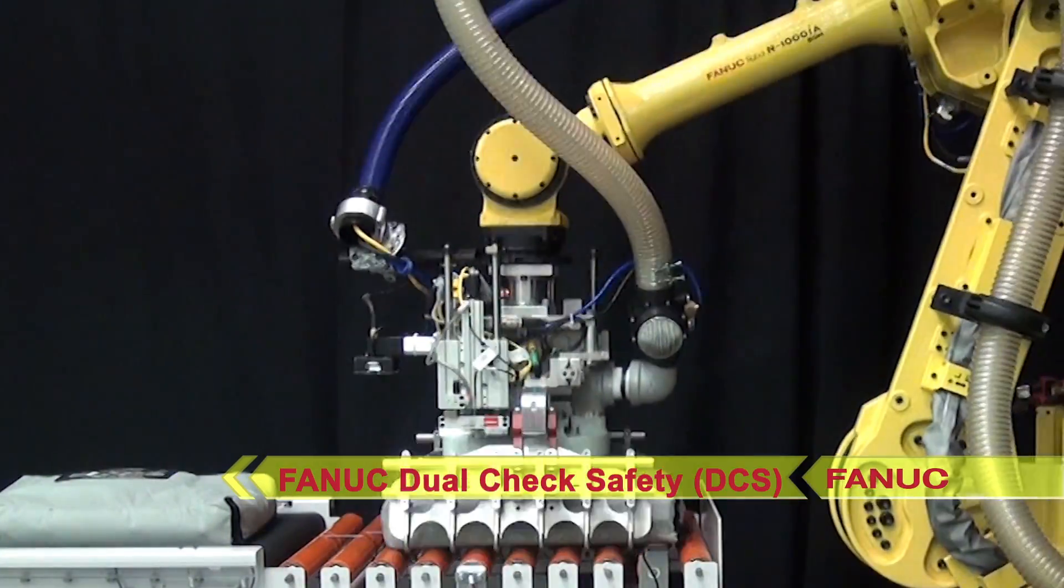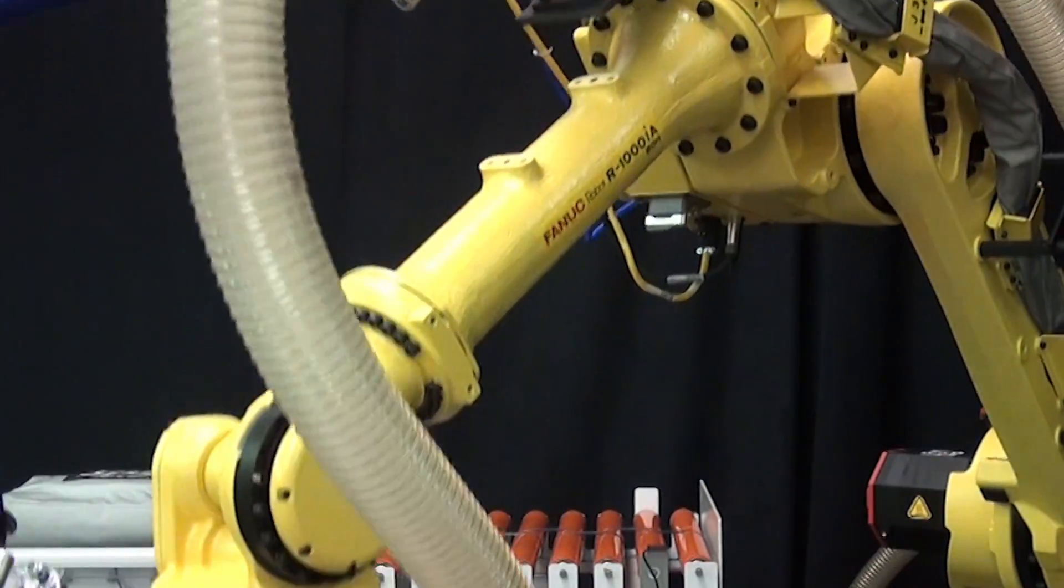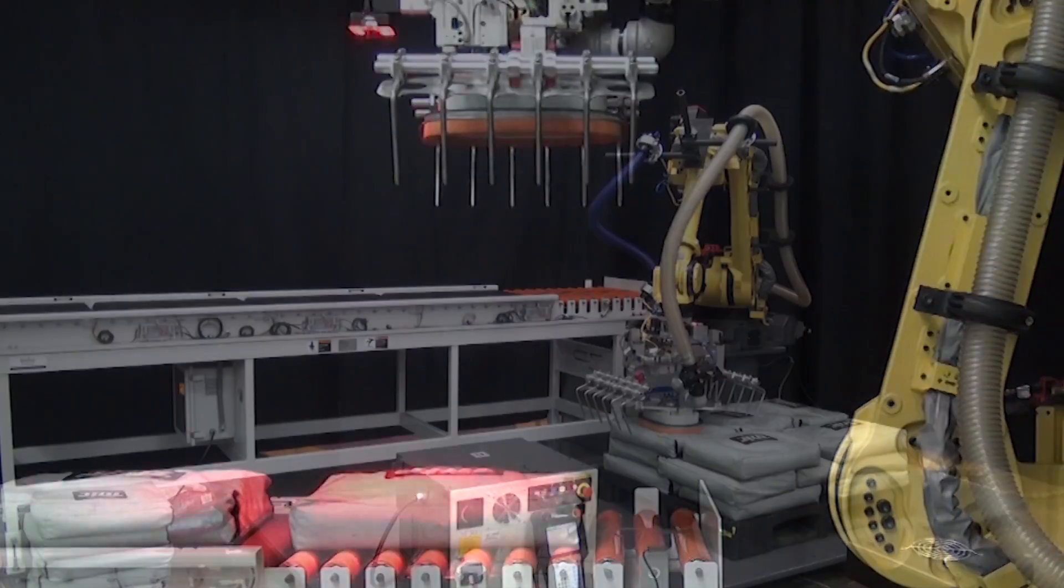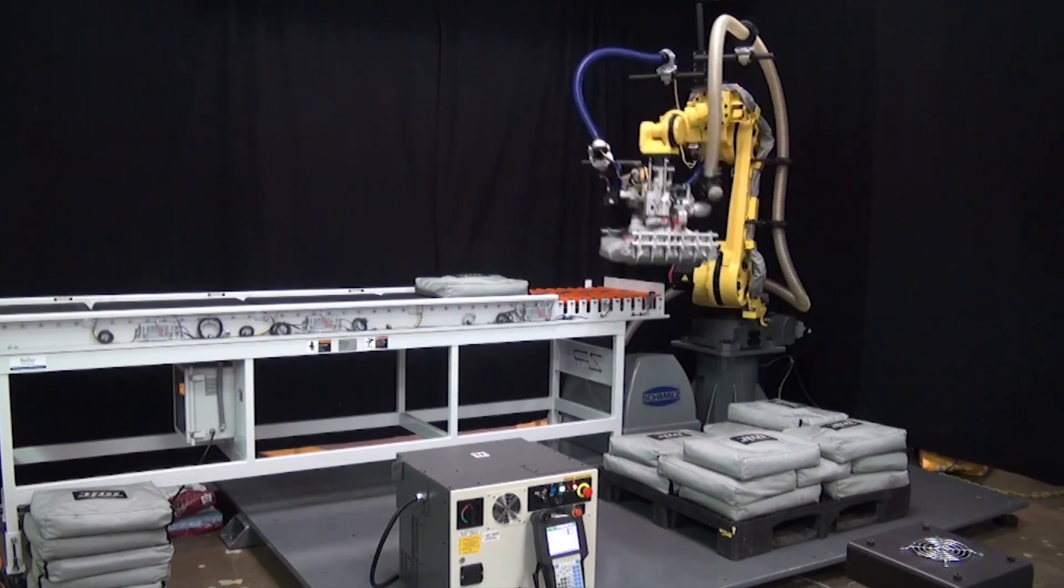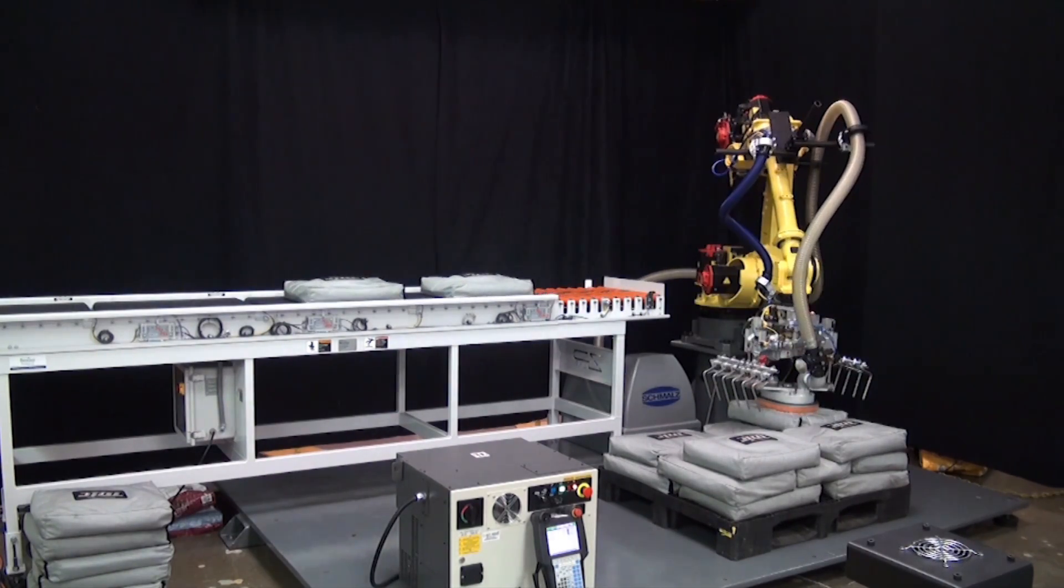DCS safety-rated robot software allows robot safety features to be programmed within the robot itself, streamlining the design of the robot cell and saving significant time, money, and floor space.